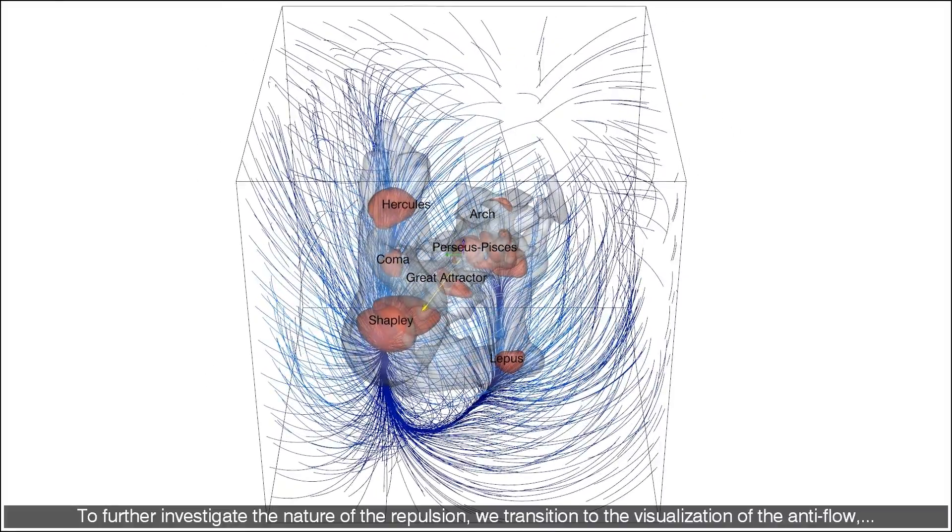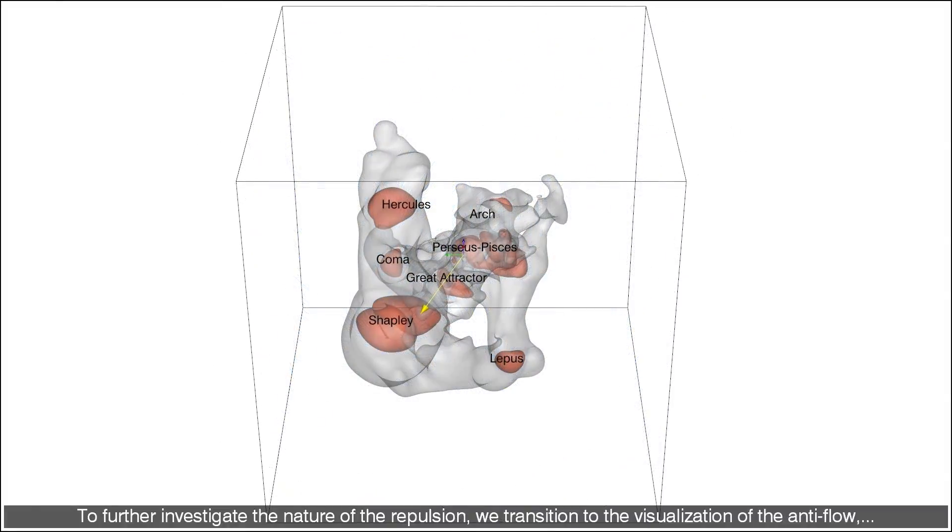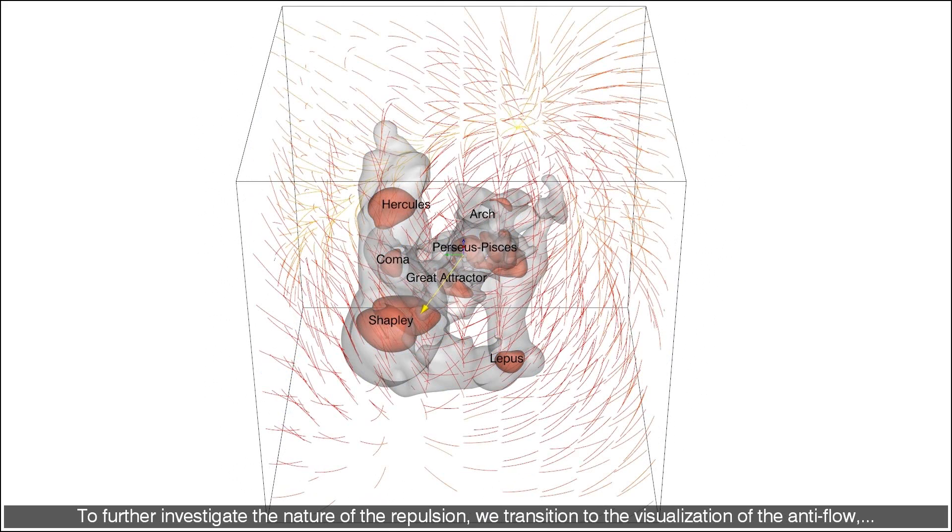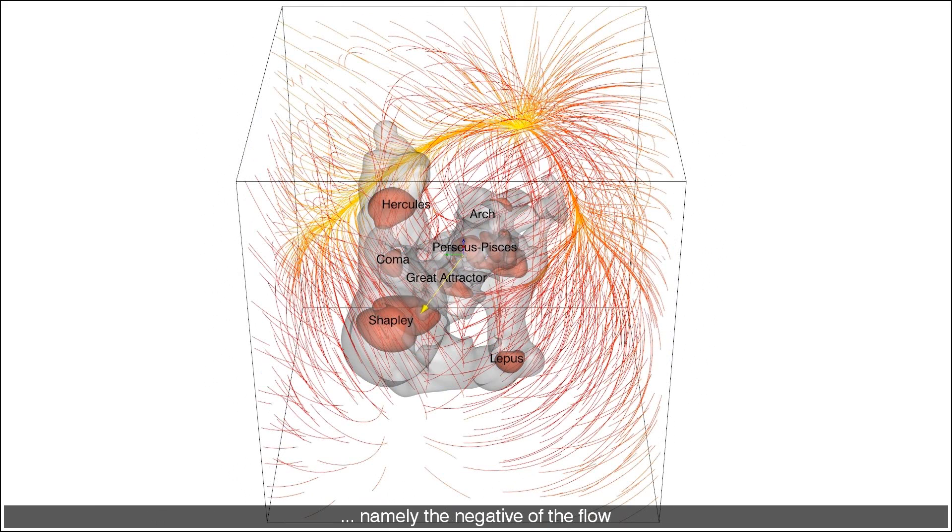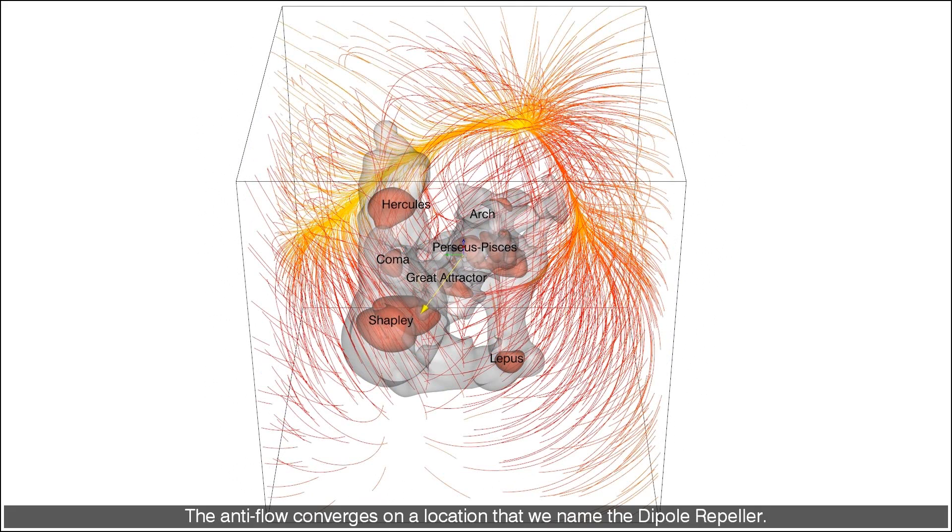To further investigate the nature of the repulsion, we transition to the visualization of the anti-flow, namely the negative of the flow. The anti-flow converges on a location that we name the dipole repeller.